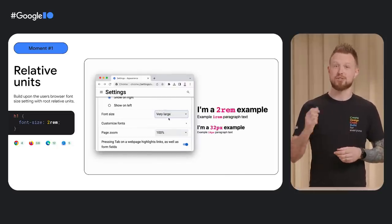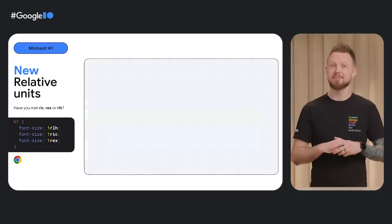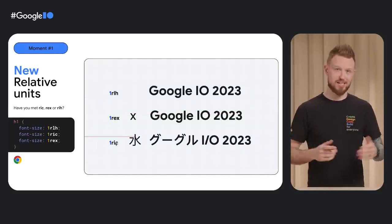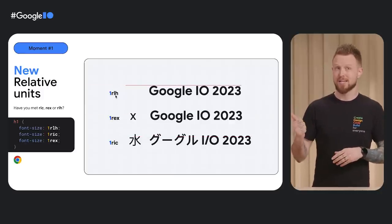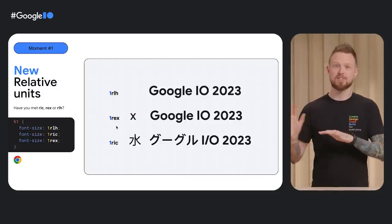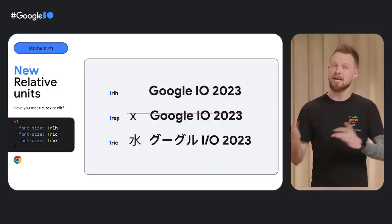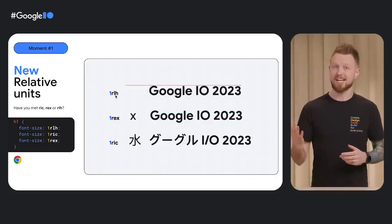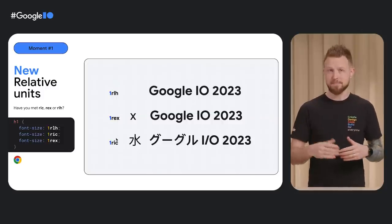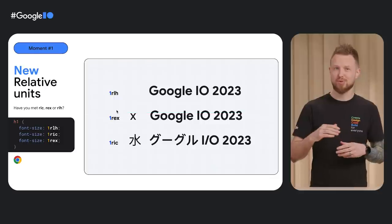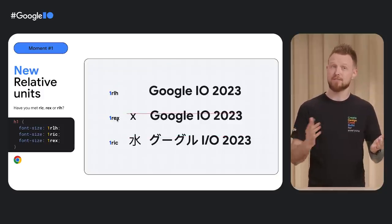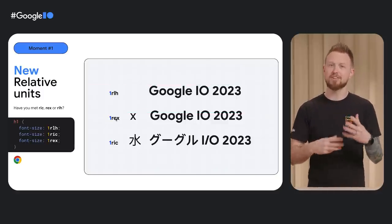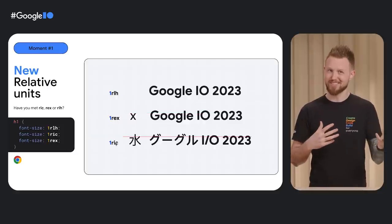This year we have more than just rem available for working with the user's preference. Meet Rick, Rex, and RLH — three new relative units. The R stands for root, a signal that these units build upon the root font size preference, like rem for root m. RLH is root line height, a unit representing the document's line height. Rex is the root x height — watch as the red line zooms in right over the lowercase x in the Google I/O title. And Rick is the root IC unit. The IC unit is based off the water symbol in Japanese called Mizu — it's an inline fluid character size.